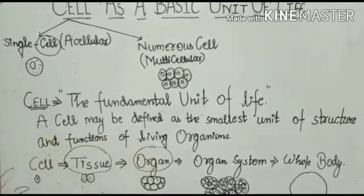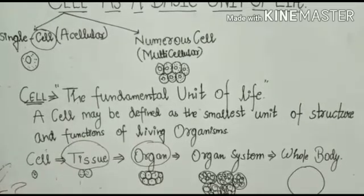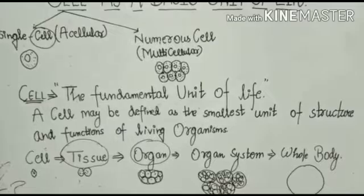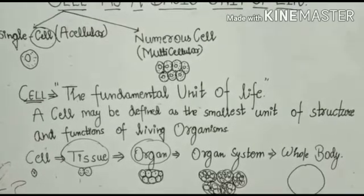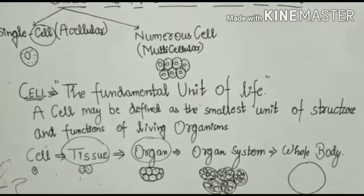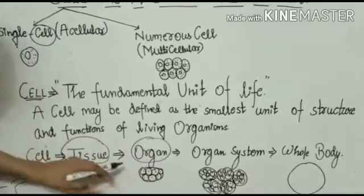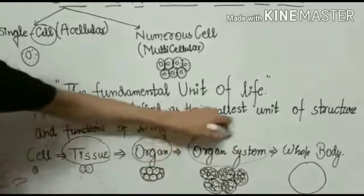If we talk about it, liver, stomach, intestine, these are organs. But what is the organ system? This is the digestive system. When we combine the organs, then what is called? Organ system.